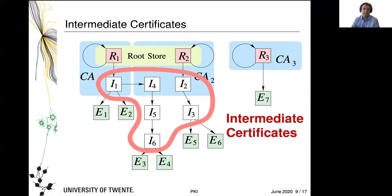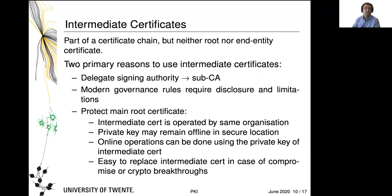Now, what about intermediate certificates? They flow down the chains — everything marked with an 'I' is an intermediate certificate, and they can be chained again or, as in the case of E1 and E2, they can issue end-host certificates. Intermediate certificates are part of a certificate chain, but they are neither root nor end-entity leaf certificates in the tree. There are two primary reasons why you would want to use intermediate certificates: one is to delegate your signing authority — essentially creating a sub-CA.